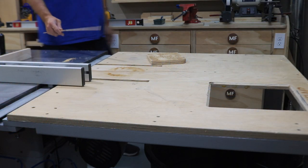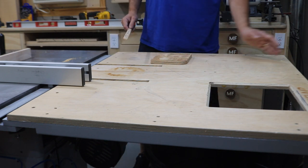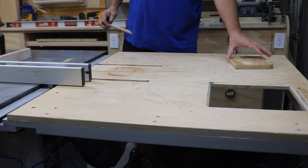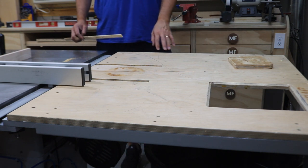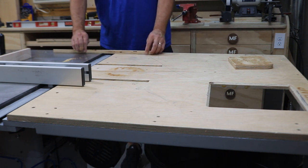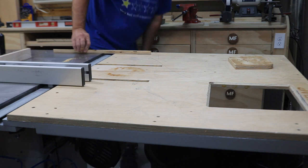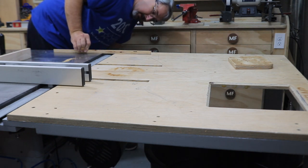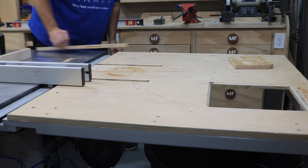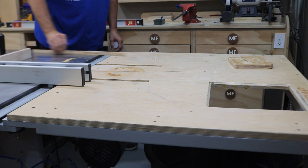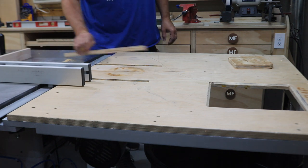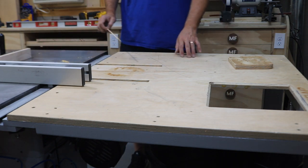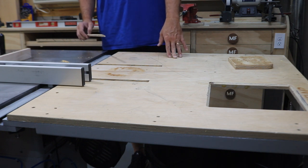As far as the outfeed table goes, not much changed. I just made it a pinch shorter. They asked if I was leveling it with the table saw, and I'm not. There's probably a three-sixteenths inch gap between the table saw and the table. So you do that so you can run boards past the table saw and onto the outfeed table.